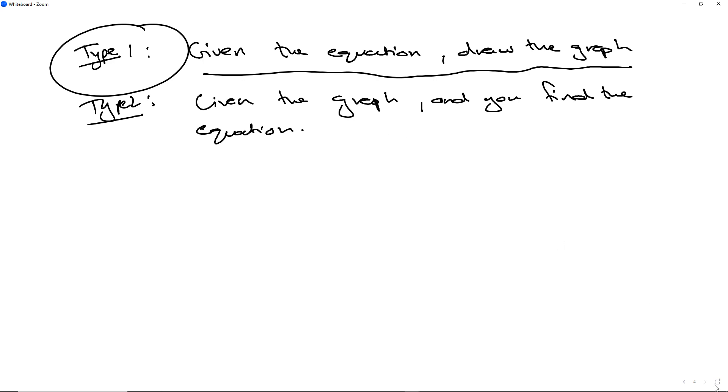Let's have a look at type one where you're given the equation and asked to draw the graph. So let's suppose I have some random equation y equals 2x plus 3 and I want to draw this graph. First thing, sketch your Cartesian plane if it's not given to you.